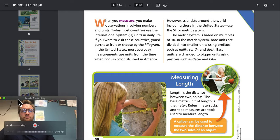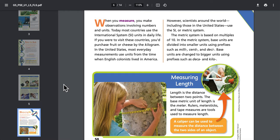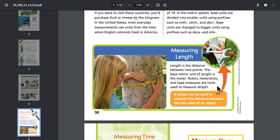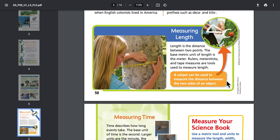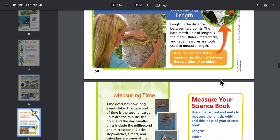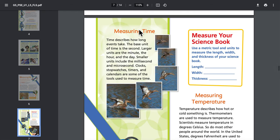Measuring length: Length is the distance between two points. The base metric unit of length is the meter. Rulers, meter sticks, and tape measures are tools used to measure length. A caliper can be used to measure the distance between the two sides of an object. Measuring time: Time describes how long events take. The base unit of time is the second. Larger units are the minute, the hour, and the day. Smaller units include the millisecond and the microsecond. Clocks, stopwatches, timers, and calendars are some of the tools used to measure time.